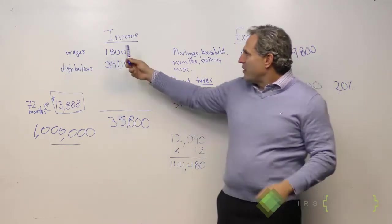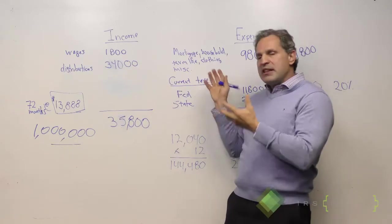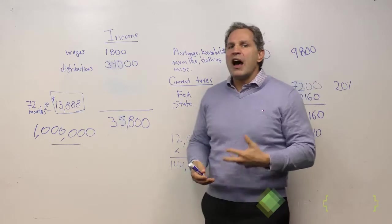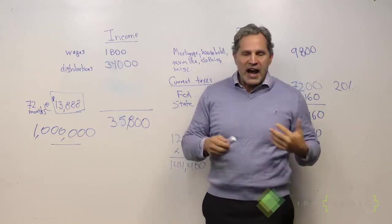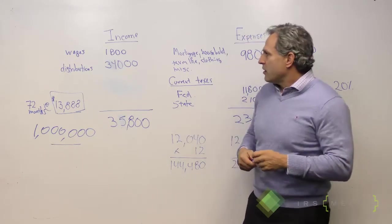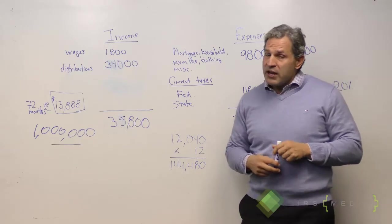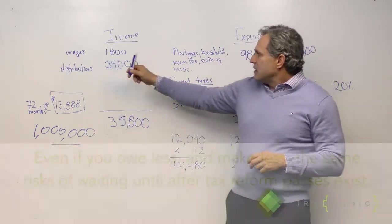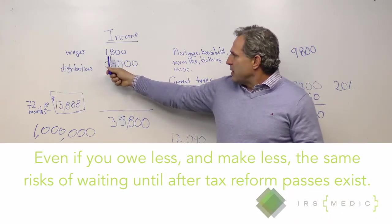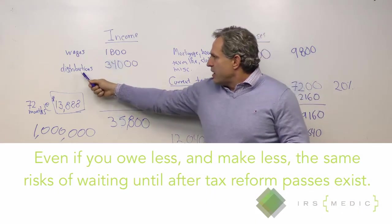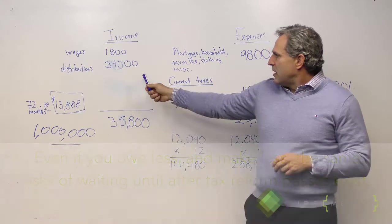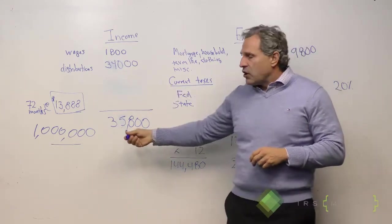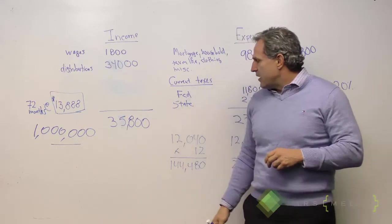Here we have our income. This is basically things that we put into the 656 OIC form, which creates the formula on what your Offer in Compromise amount should be. Our client has not been doing the right thing for a few years. We have about a million dollars he owes. His income: there's about $1,800 in wages, and he has distributions from his partnership for $34,000 a year, giving him a total monthly amount of $35,800.